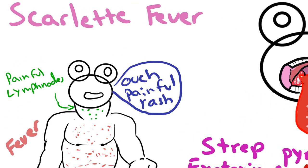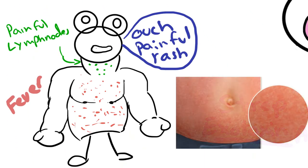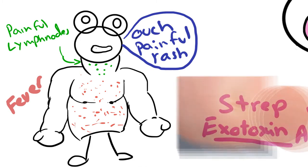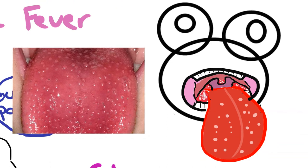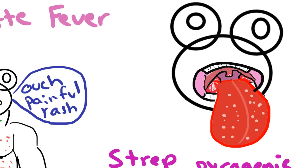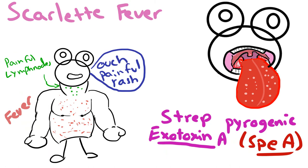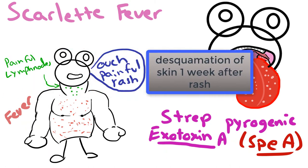GAS complications from strep throat can lead to scarlet fever, which presents as a painful rash that feels sandpaper-like in consistency and blanches with pressure. It starts in the chest and spreads over the face, along with fever, tender lymphadenopathy, strawberry tongue (erythematous papillae over the tongue), and a very red sore throat from the prior strep infection. The desquamation of skin happens about a week after the rash.